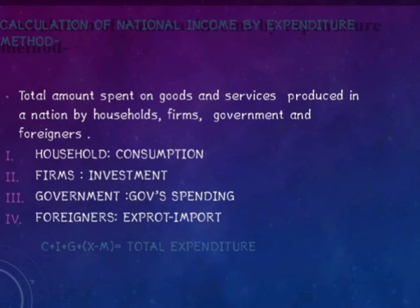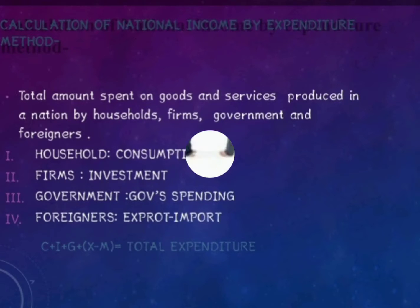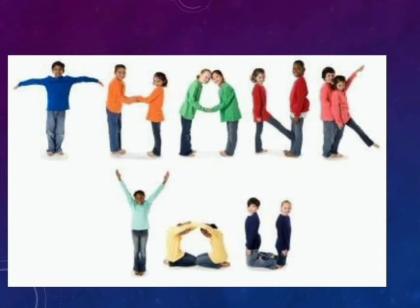Calculation of National Income by the Expenditure Method: the total amount spent on goods and services produced in a nation by households, firms, government, and foreigners. Consumption plus Investment plus Government Spending plus Exports minus Imports — C plus I plus G plus X minus M — equals Total Expenditure. Thank you all.